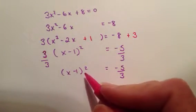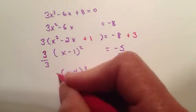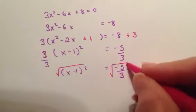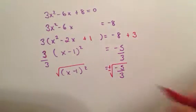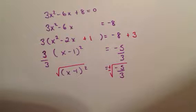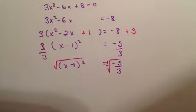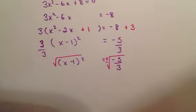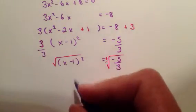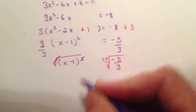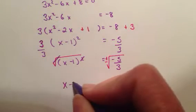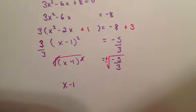Now, because I have a square all by itself, I can square root both sides. Don't forget to add the plus and minus. Whenever you're the one that's square rooting both sides, you have to consider the positive and negative. So it's plus and minus square root of negative 5 thirds. This square and square root cancel each other out, so very nicely on this side, I just have left x minus 1.